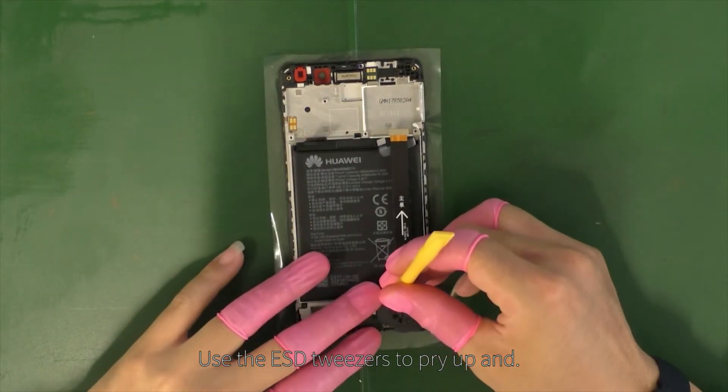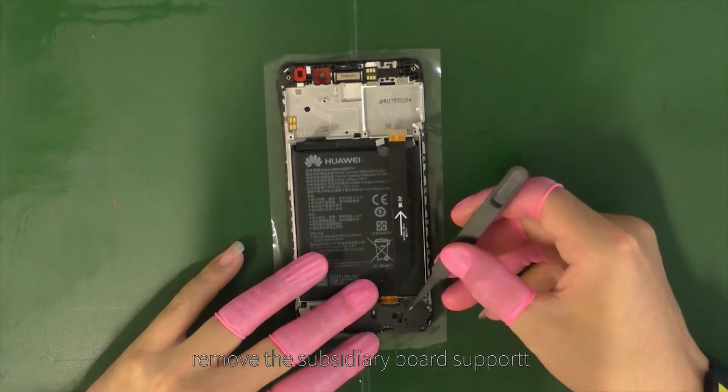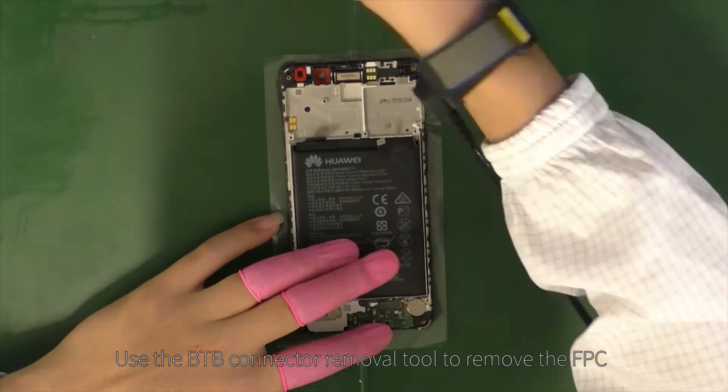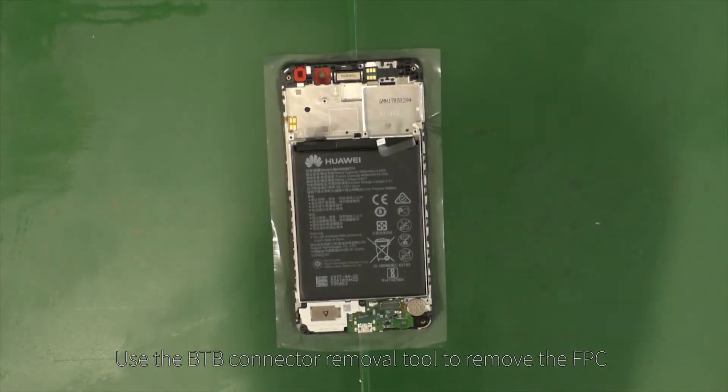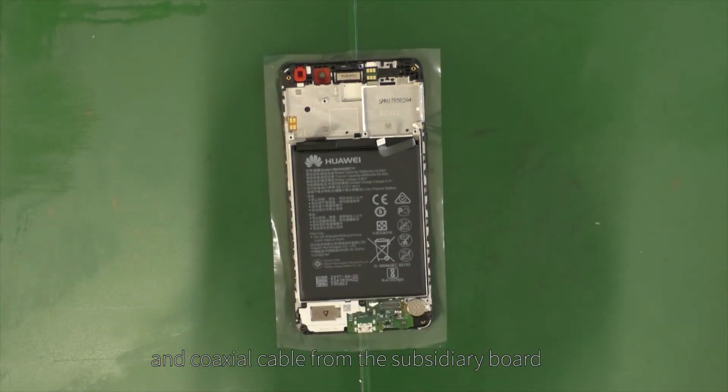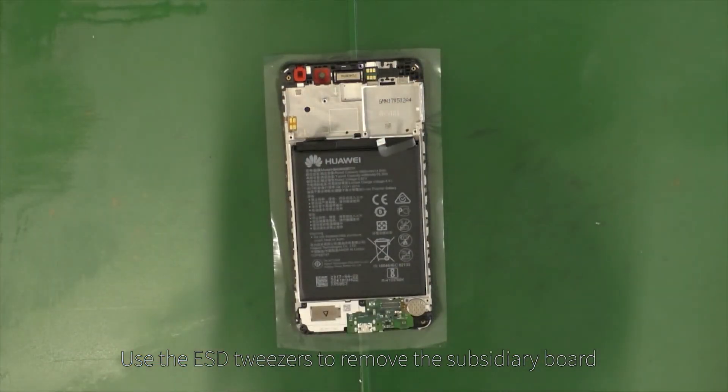Use the ESD tweezers to pry up and remove the subsidiary board support. Use the V2B connector removal tool to remove the FPC and coaxial cable from the subsidiary board. Use the ESD tweezers to remove the subsidiary board.